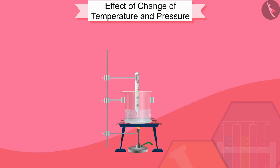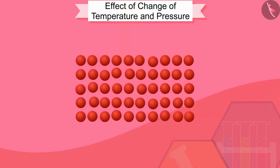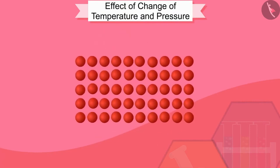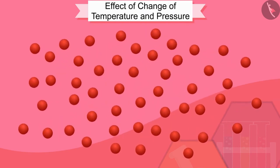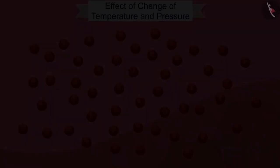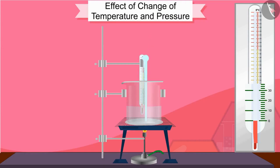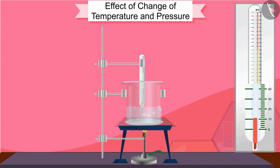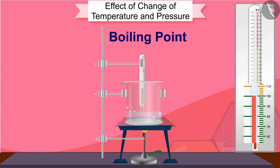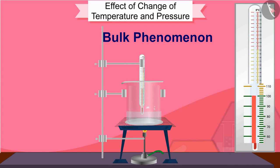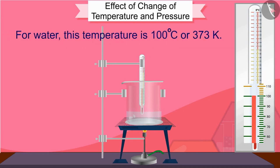Now let us see what happens during the change from water to water vapour. When we supply heat energy to water, particles start moving even faster. At a certain temperature, a point is reached when the particles have enough energy to break free from the forces of attraction of each other. At this temperature, the liquid starts turning into gas. The temperature at which the liquid starts boiling at atmospheric pressure is called its boiling point. Boiling is a bulk phenomenon — particles from the bulk of the liquid gain enough energy to change into the vapour state. For water, this temperature is 100 degrees Celsius or 373 Kelvin.